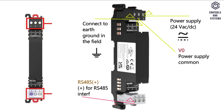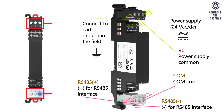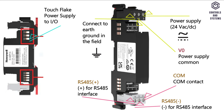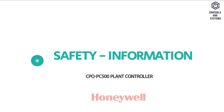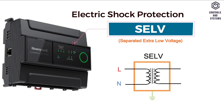Wiring Controller Parameters: Terminal 4 is RS-485 Plus, Terminal 5 is RS-485 Minus, Terminal 6 is RS-485 Ground. This is Touch Flake power supply to I/O and Touch Flake communication to I/O.